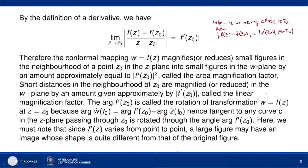So in the case of area, |f'(z0)|² is called the area magnification factor, and in the case of lengths, |f'(z0)| is called the linear magnification factor. The argument of f'(z0) is called the rotation of the transformation w = f(z) at z = z0, because arg(ẇ(t0)) = arg(f'(z0)) + arg(ż(t0)), as seen in the previous lecture on conformal mapping.